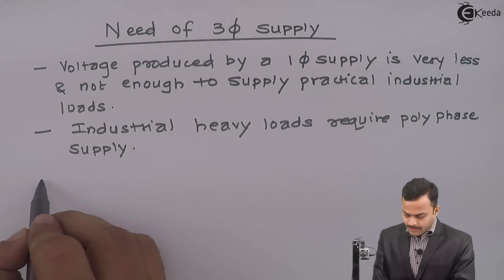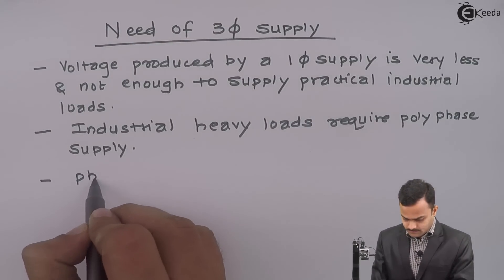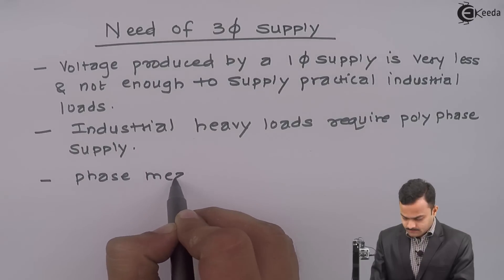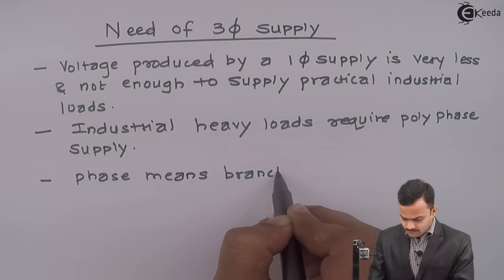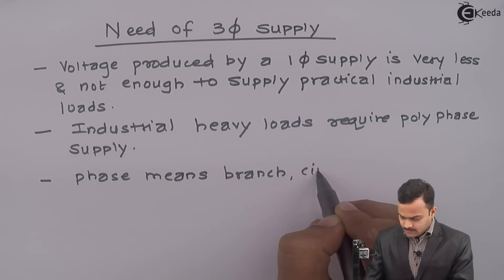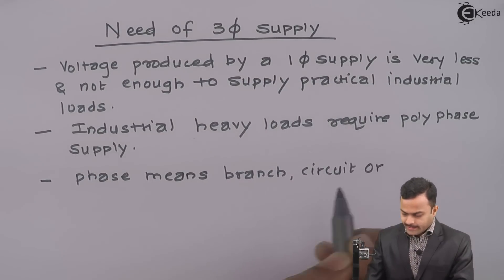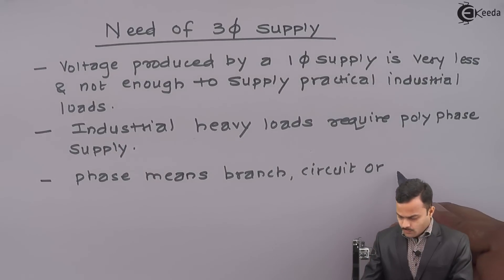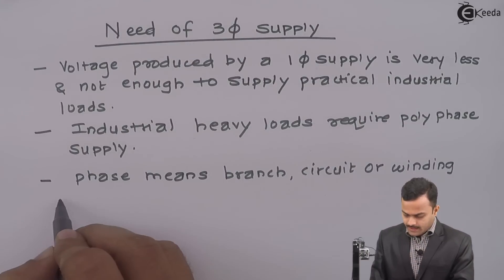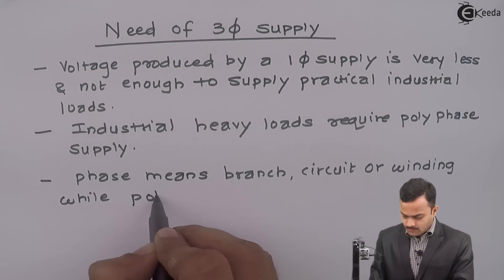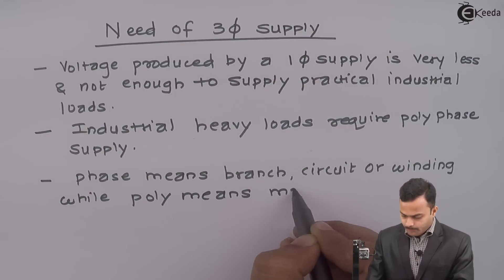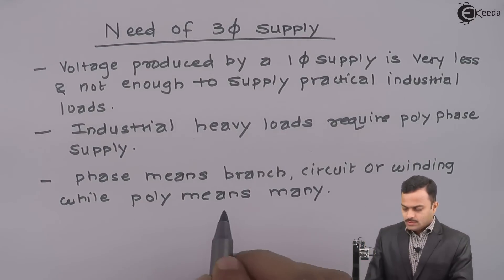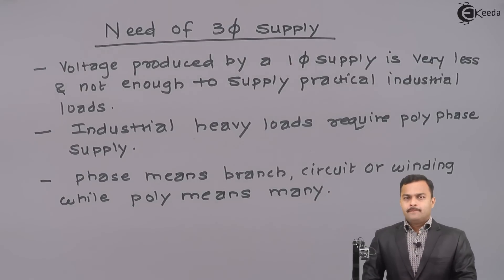What is the meaning of phase? Phase means branch or circuit or you can even say voltage winding. While poly means many. So, obviously, I need to connect many circuits, many single phase circuits in such a way that it will give me high voltage and high power.